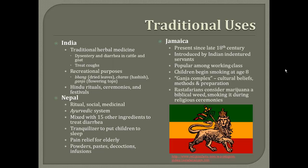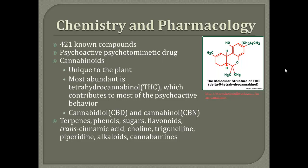There are currently 421 known compounds found in Cannabis sativa, and it is considered a psychoactive psychotomimetic drug because it mimics psychotic states. While most hallucinogens have alkaloids occurring as their most active compound, marijuana contains cannabinoids, which is unique to the plant and most concentrated in female tops. The most abundant cannabinoid found in Cannabis sativa is tetrahydrocannabinol (THC). Other compounds include cannabidiol (CBD) and cannabinol (CBN). Most research has focused on THC, but it's believed that interactions between compounds can enhance or decrease the psychotomimetic effects.